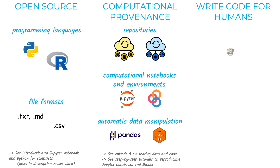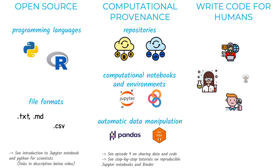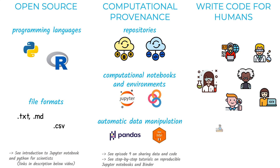And finally, it is always important to remember that we write code that is going to be shared with other scientists. So it is important to follow good writing practices, such as using variable names that are pertinent and documenting the code properly.